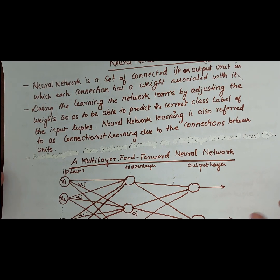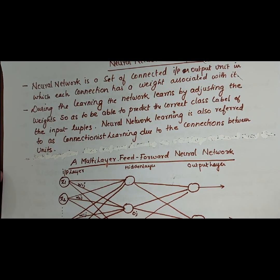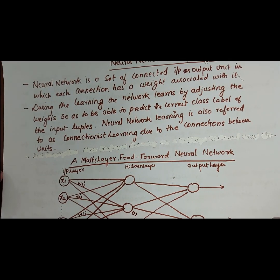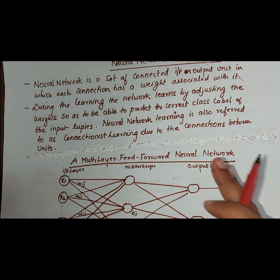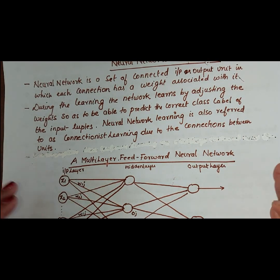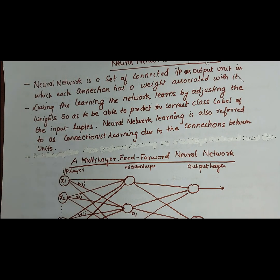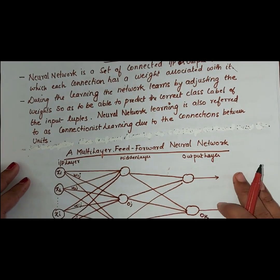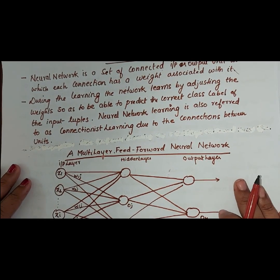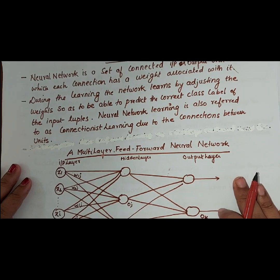Neural network learning is also referred to as connectionist learning, due to the connections between the units — the input unit, output unit, and hidden layer are all connected to each other. So it is called connectionist learning.